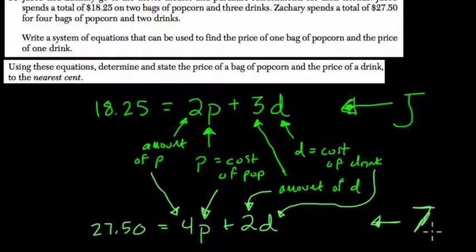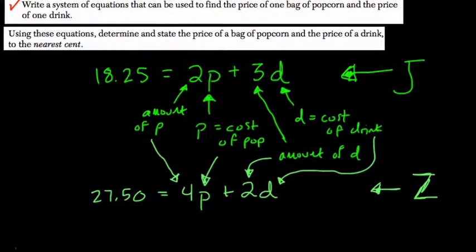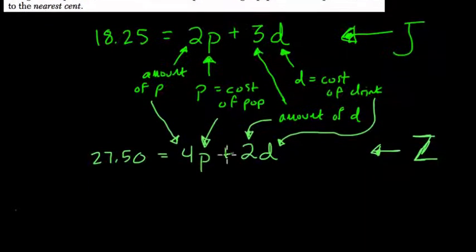So notice, they didn't say anything about a system of equations, but as I read this, I made these two equations. That's a good habit to get into because now I've got everything set up. And in fact, I'm just noticing we answered the first question. They asked us to write a system of equations that can be used to find the price of one bag of popcorn and the price of one drink. Well, that's what these two things are here.